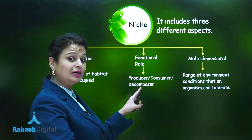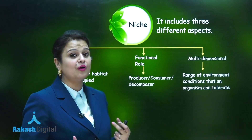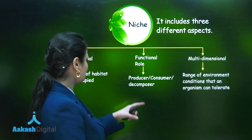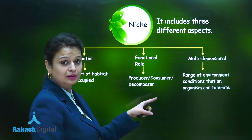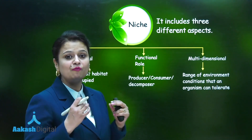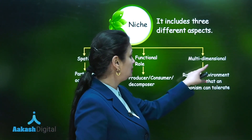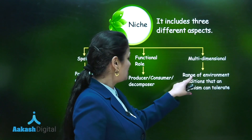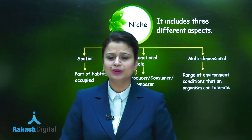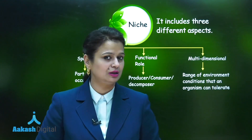If an organism is dependent on others for food, it is a consumer. If it is involved in decomposition of organic matter, it is a decomposer. So spatial niche is the address and functional niche is the profession. The third aspect is the multi-dimensional niche, which means the range of environmental conditions that an organism can tolerate — for example, archaebacteria.